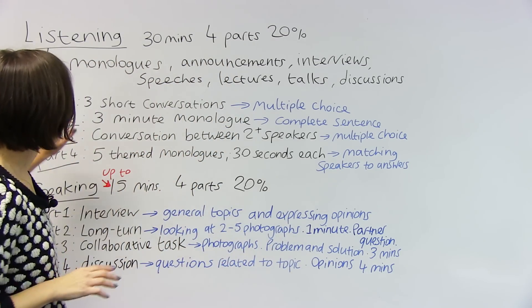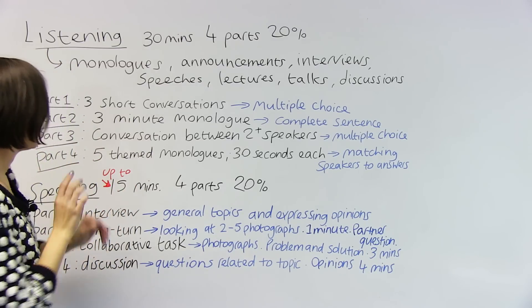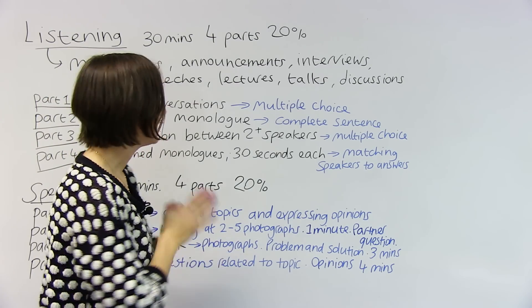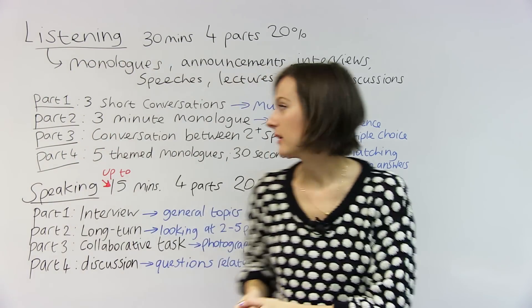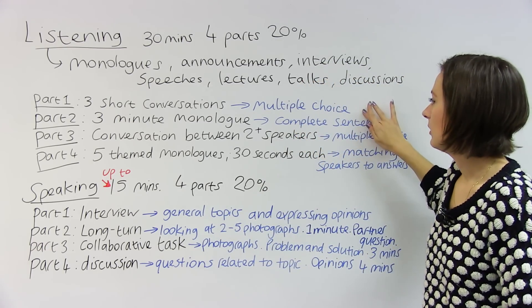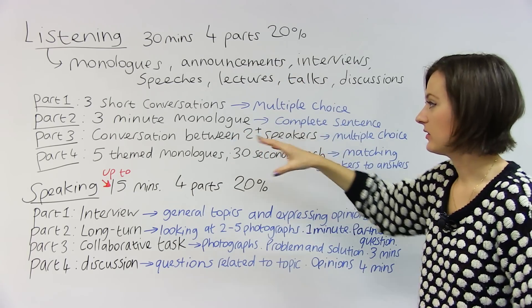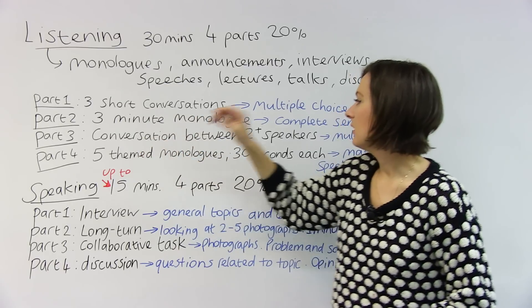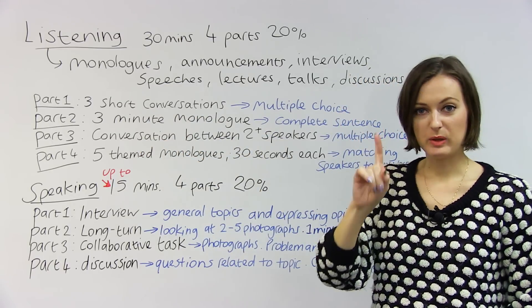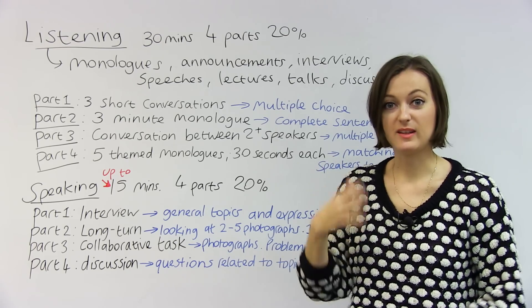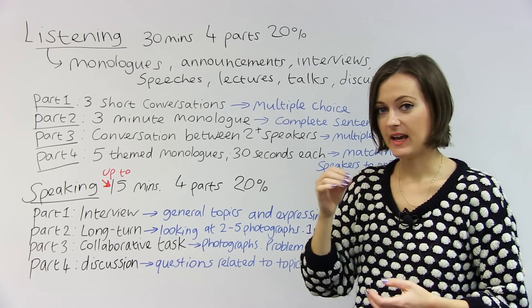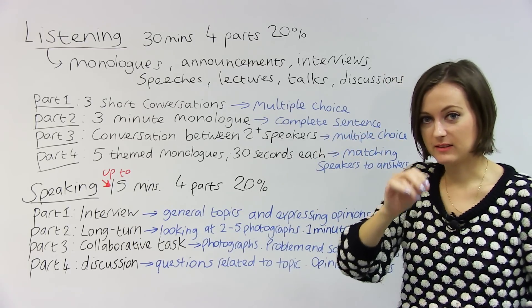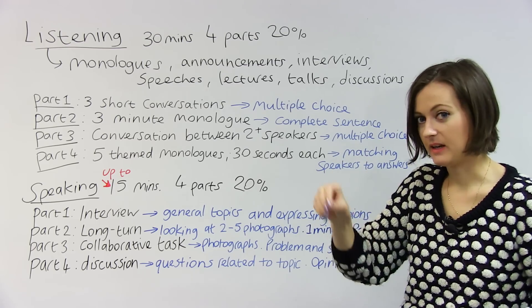So, let's have a look at the parts now in more detail. Part one is some short conversations, and it's going to be a multiple-choice answer. Short conversations, so there'll be more than one speaker. That's part one. Part two, three-minute monologue. So, it'll be one person speaking for three minutes, and you have to listen closely just based on what you hear that person say. You need to complete the sentence. So, as you listen, listen out, complete the sentence.